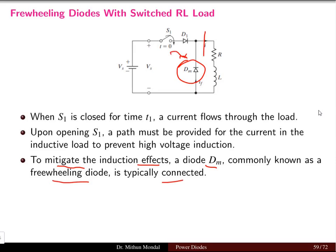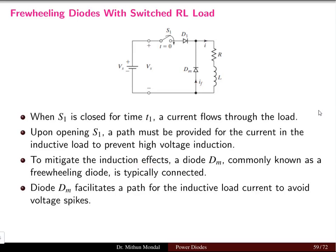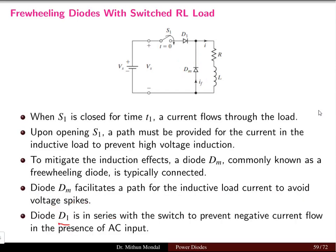The diode DM facilitates a path for the inductive load current to avoid voltage spikes. Whatever energy is stored in the inductor, the diode provides the path for that inductive energy to dissipate, avoiding any voltage spike in the circuit. Diode D1 is in series with the switch — this is the main diode, placed in series with the switch to prevent negative current flow in the presence of AC input.